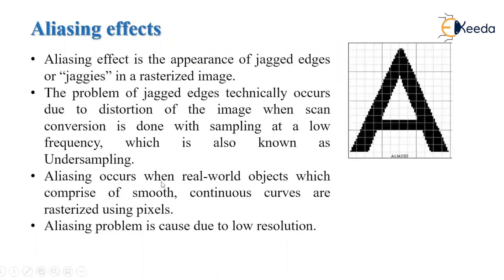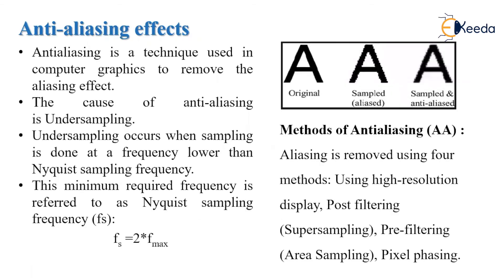Aliasing occurs when real-world objects, which comprise both smooth continuous curves, are rasterized using pixels. This aliasing problem is caused due to low resolution. To overcome this aliasing effect, we have to use the anti-aliasing technique.